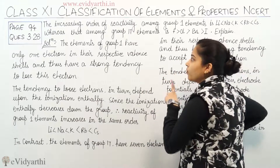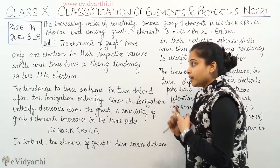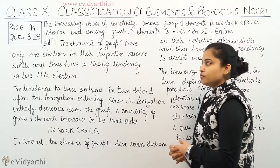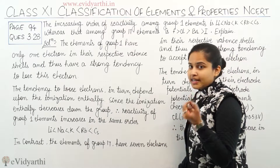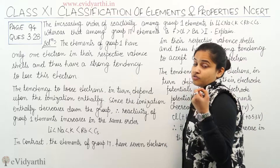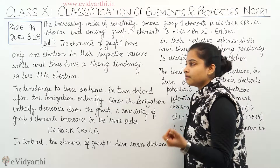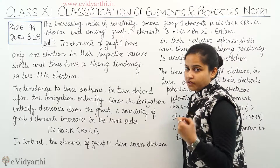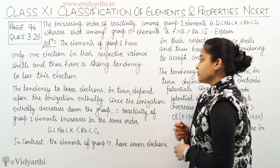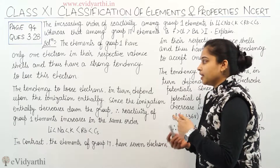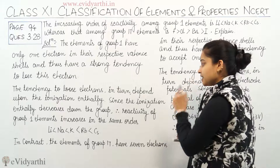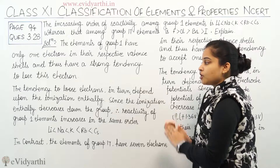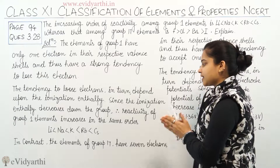The elements of Group 1 have only one electron in their respective valence shell and have a strong tendency to lose this electron to attain the stable noble gas configuration. The tendency to lose an electron in turn depends upon the ionization enthalpy. Since the ionization enthalpy decreases down the group, therefore the reactivity of Group 1 elements increases in the same order.